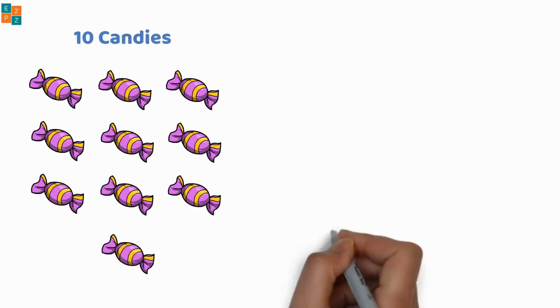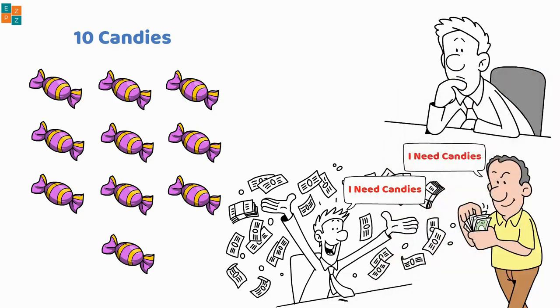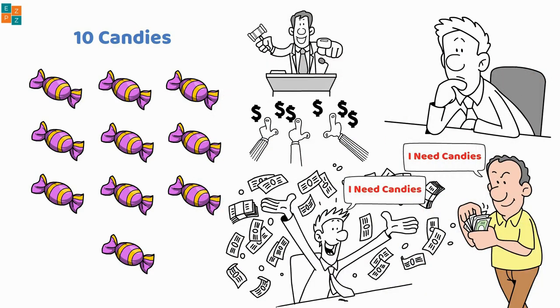Imagine you have 10 candies and suddenly everyone has more money. Now everyone wants your candies and they're willing to pay more, but you still only have 10 candies, so you might decide to charge more for each candy.